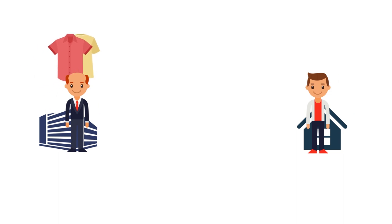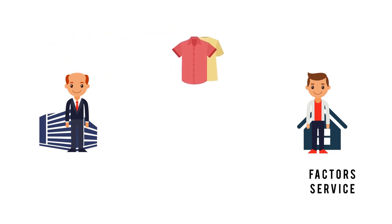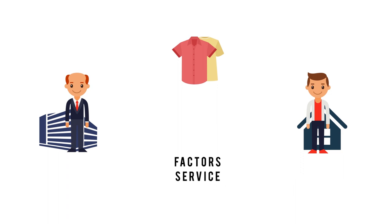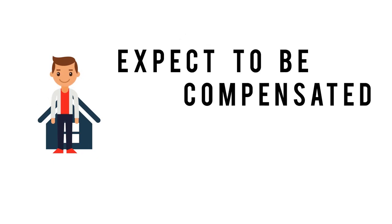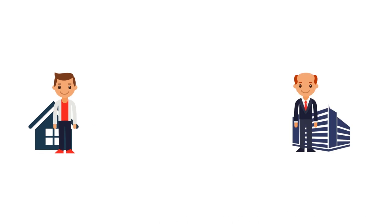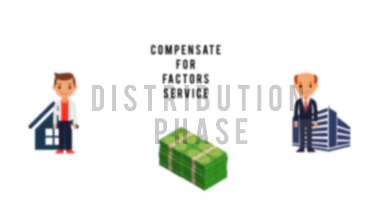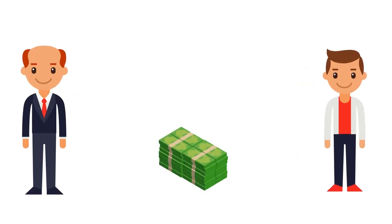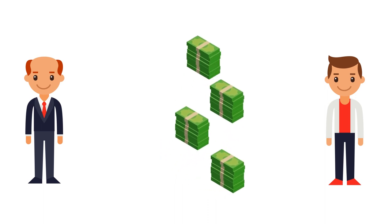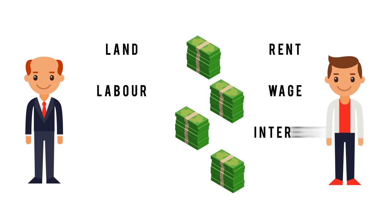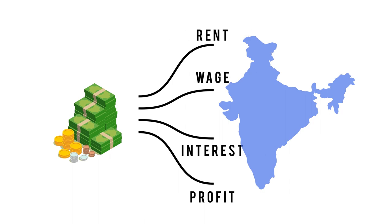Now that the product has been produced using factor services supplied by households, the households expect to be compensated for the inputs provided. Therefore firms compensate the household for their services — this forms the distribution phase, also called factor pricing. Firms compensate factor services in the form of rent for land, wage for labor, interest for capital, and profit for entrepreneurship. Distribution is the study of how national income is distributed through salaries, wages, profits, and interest.